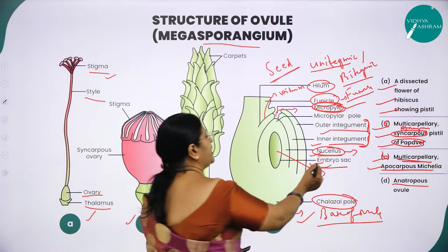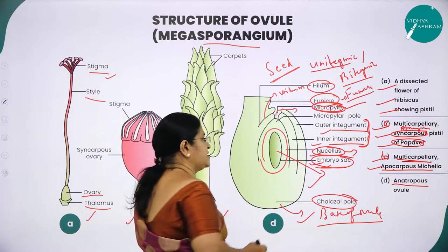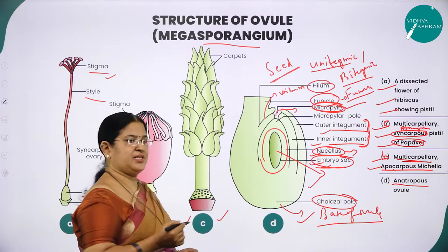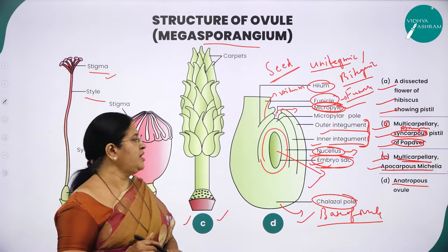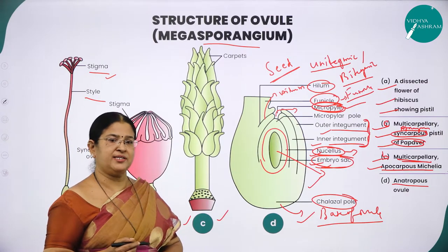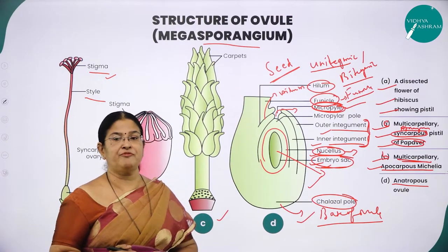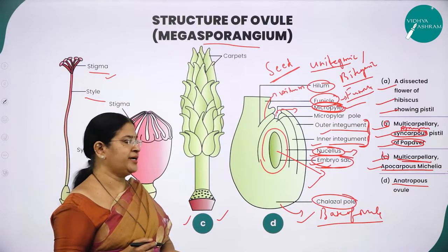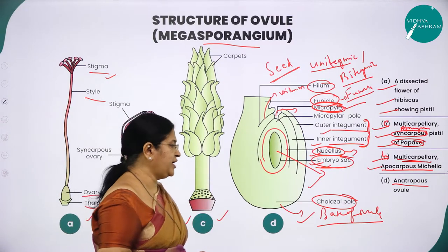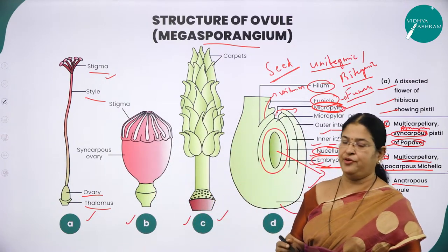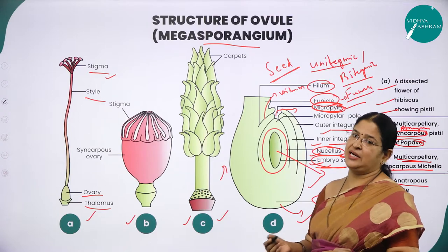The embryo sac is located within the nucellus. A typical angiosperm ovule will have only a single embryo sac formed from the megaspore mother cell through meiotic cell division. This is very important from examination point of view, as it may be asked as a five-mark question: explain with a neat labelled diagram the structure of a typical anatropous ovule.